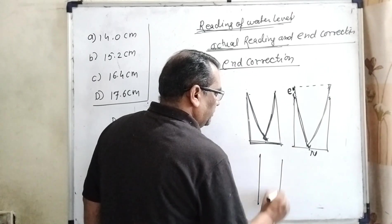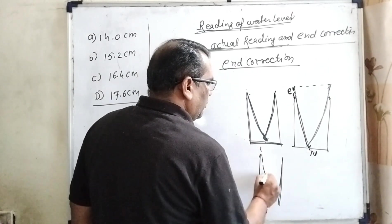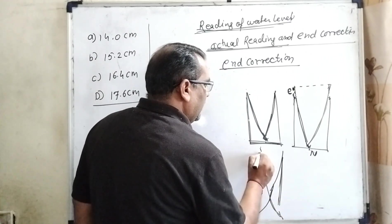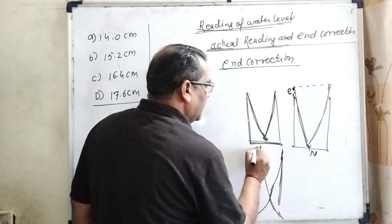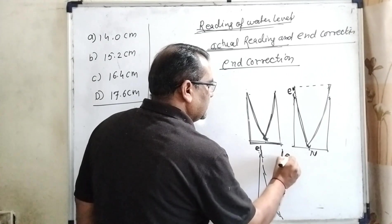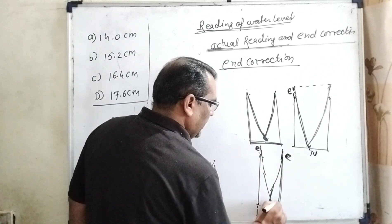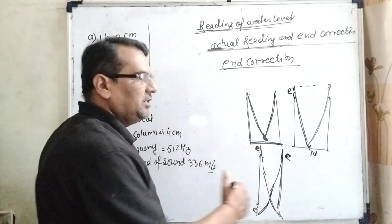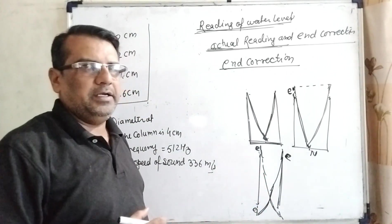In an open tube, on both sides, antinodes are formed. Here is E, the end correction. Here is also end correction, because these antinodes are formed outside this tube. This is called end correction.